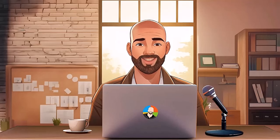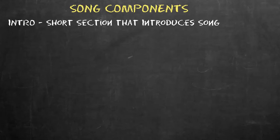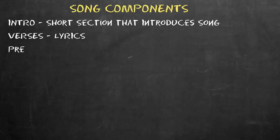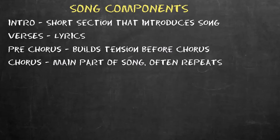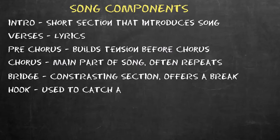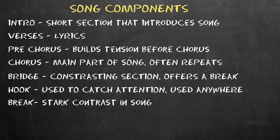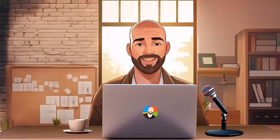Before talking about how to use meta tags in Suno, let's look at the components that make up a typical song. These include: the Intro, a short section that sets the mood; the Verses, which tell the story; the Pre-Chorus, which is optional and builds tension before the chorus; the Chorus, the main repeated portion; the Bridge, a contrasting section offering a break from repetition; the Hook, an element used to catch the listener's attention; the Break, a stark contrast such as a pause or sound effect; the Interlude, a transition usually without vocals; and the Outro, the conclusion of the song, often instrumental or a fade out. With Suno, you can place these elements into the custom section to create a specific song arrangement.